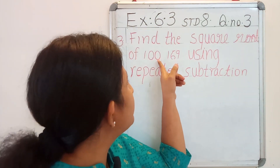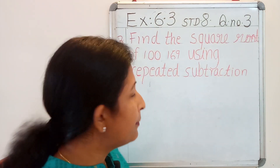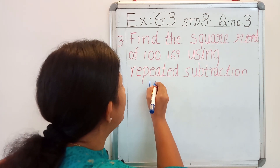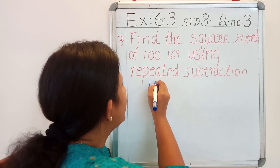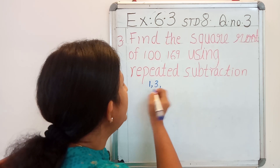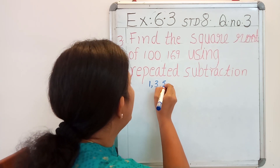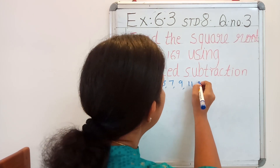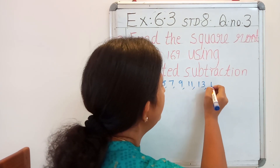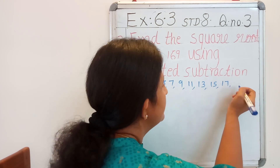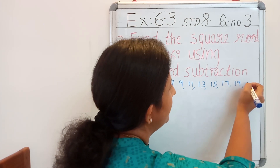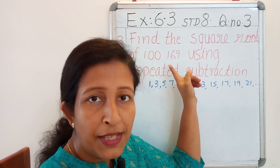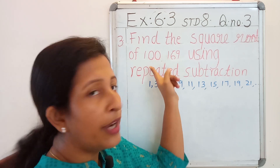First we are going to find the square root of 100. For that I am going to write down some numbers — starting from 1, they should be natural and odd: 1, 3, 5, 7, 9, 11, 13, 15, 17, 19, 21, etc.